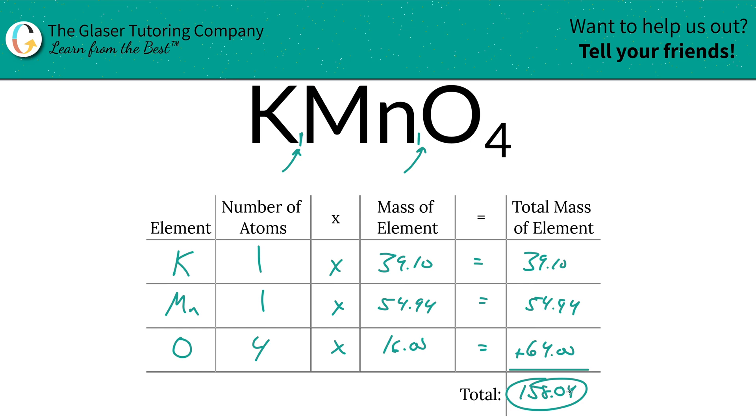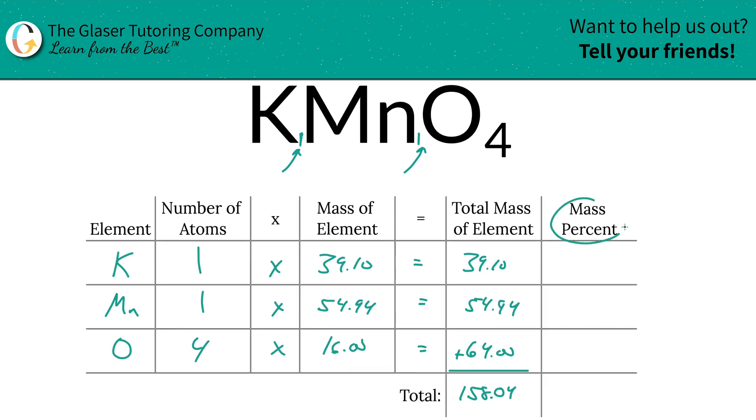And there it is. That was the first step of the process, finding the total mass of the compound. Now what I'm going to do is add a column to this table to help us find those percents. So to find the mass percent of potassium, we're going to take the total mass of that potassium.